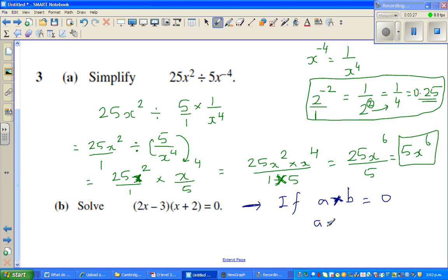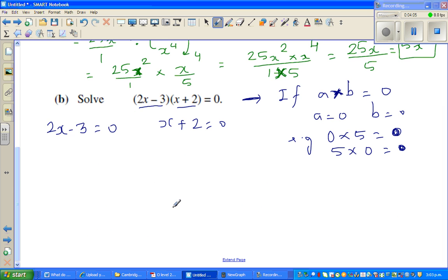We can say a is 0 or b is 0. To give you an example, say 0 times 5 is 0 and 5 times 0 is also 0. That means if you multiply two numbers and if one of them is 0, the product is always 0. So this is one number and this is also a number. So I can say, well, 2x minus 3 is 0, and x plus 2 is also 0.